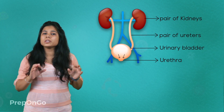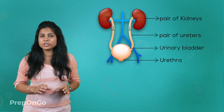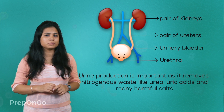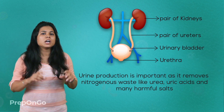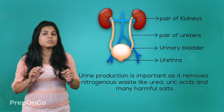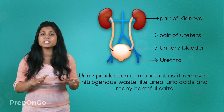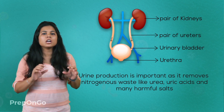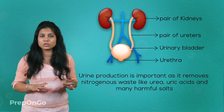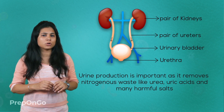The removal and production of urine is important because it involves the removal of waste materials — just like carbon dioxide is removed from the blood through the lungs. It is important because urine consists of urea, uric acids, and many harmful salts.